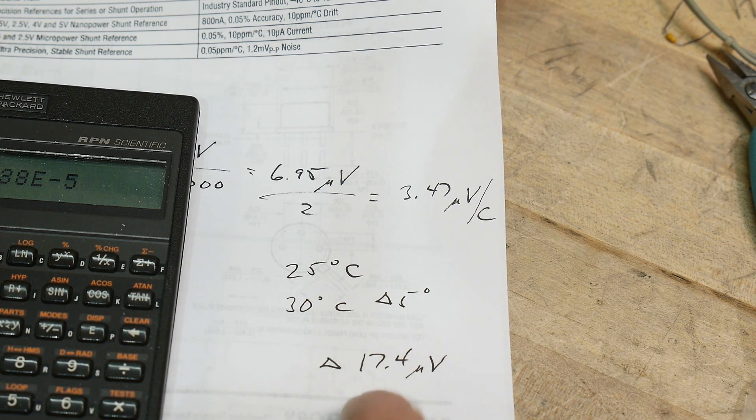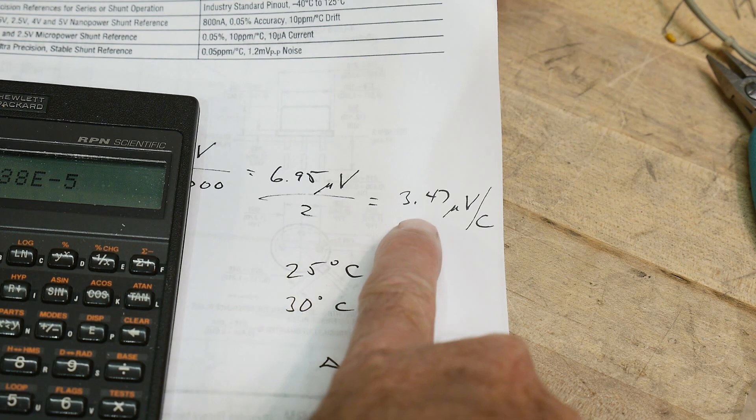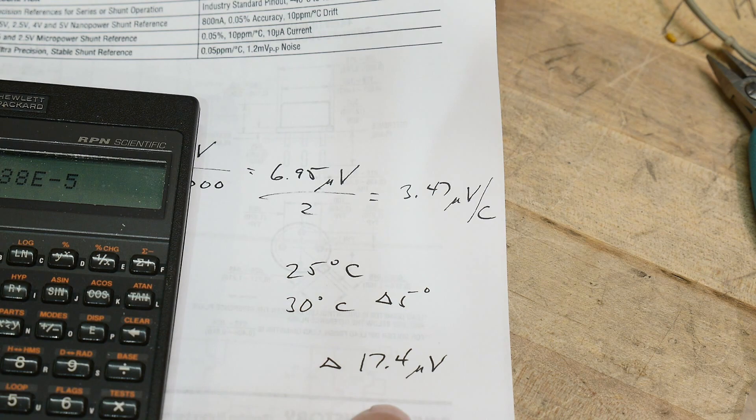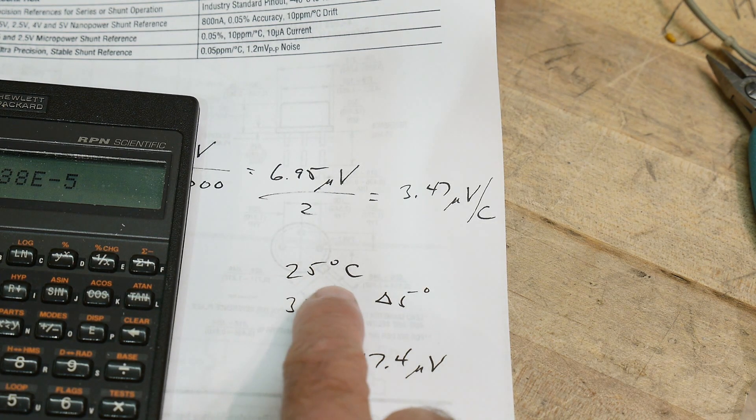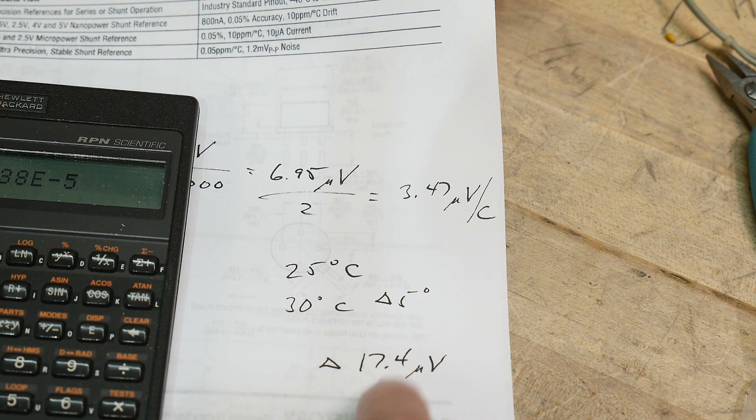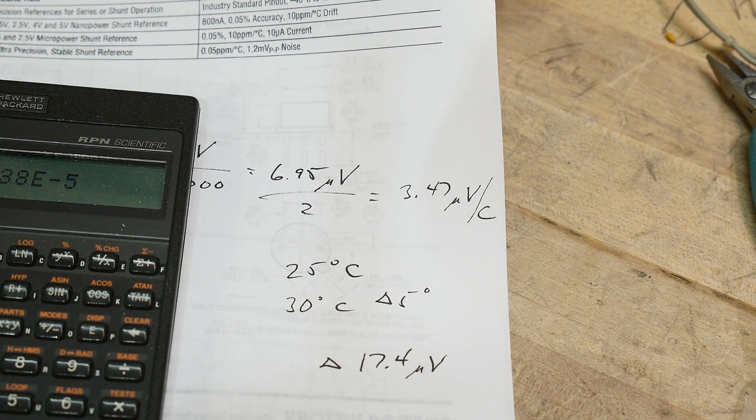You would take this number, multiply it by five, and you would get 17.4 microvolt delta. So five times 3.47 is 17. If you calibrated your instrument at 25°C but you used it at 30°C, you're going to have an error of 17 microvolts. That's pretty low.